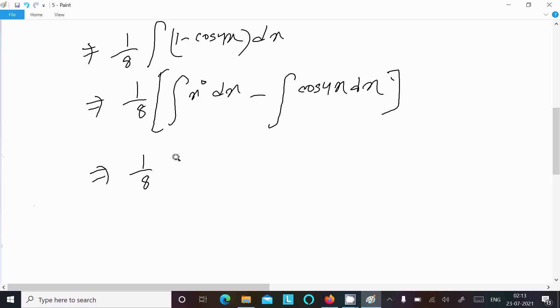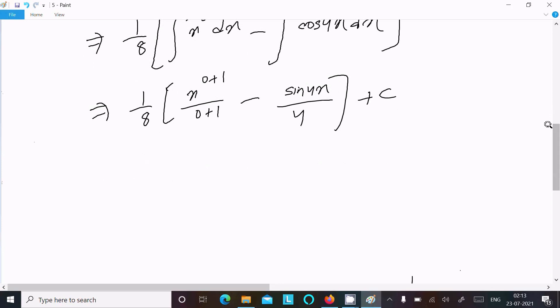So 1/8 times [x^(0+1)/(0+1) - sin 4x/4 + c]. This simplifies to 1/8 [x - sin 4x/4] + c.